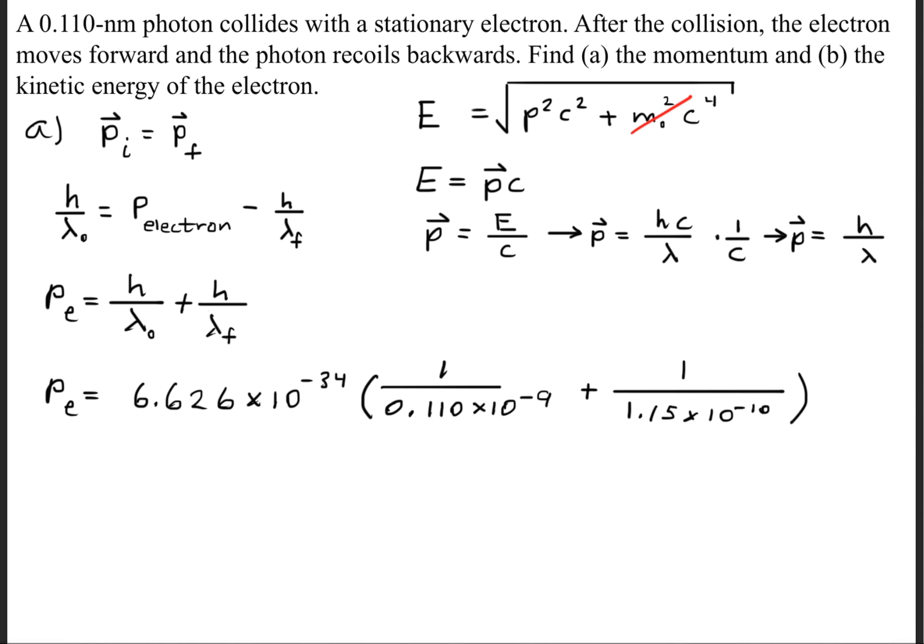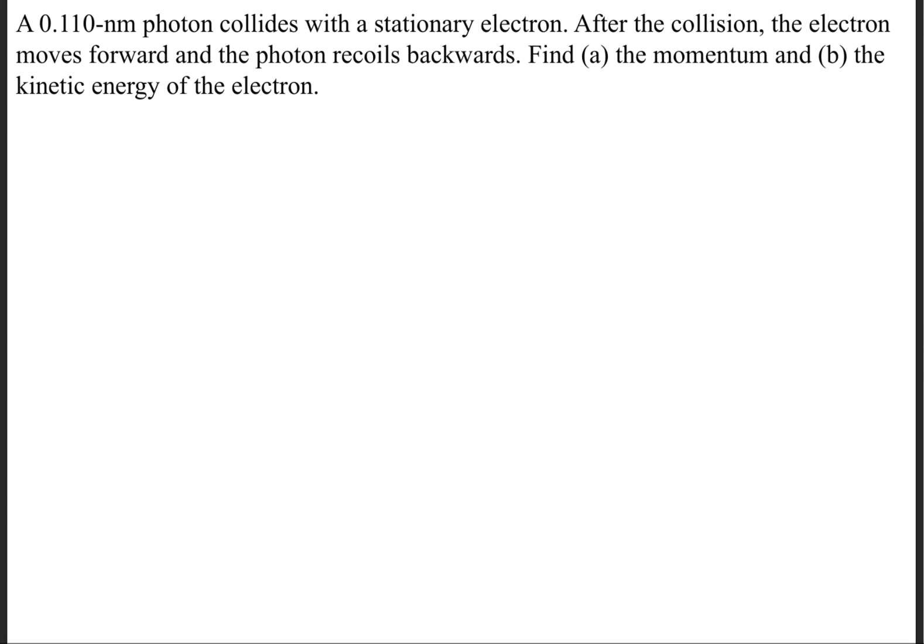Next, we'll plug in the values for these variables right here. We now know what the initial wavelength is, and we do know what the final wavelength is. So this will give us that the momentum of the electron is 1.18 times 10 to the negative 23rd kilogram meters per second.